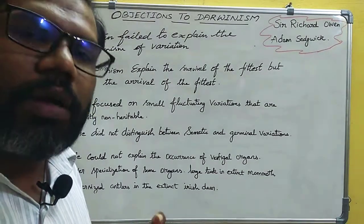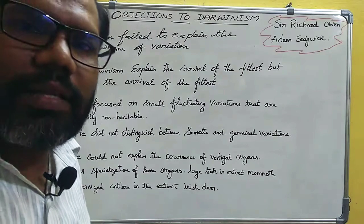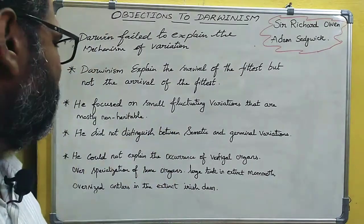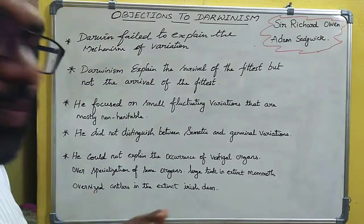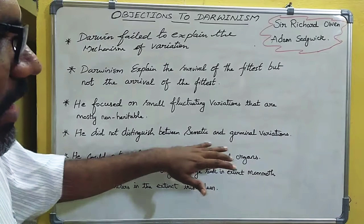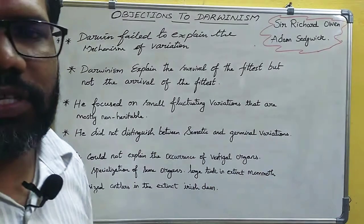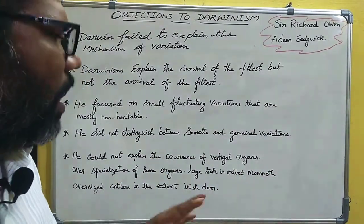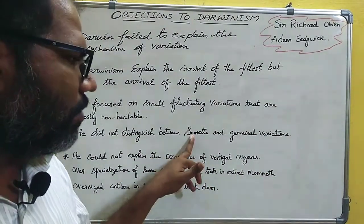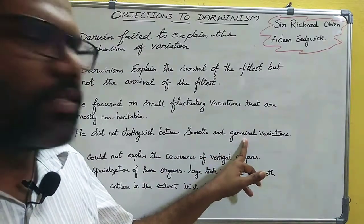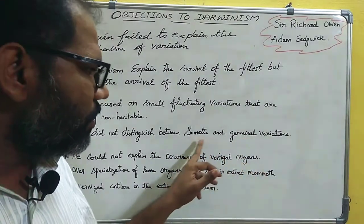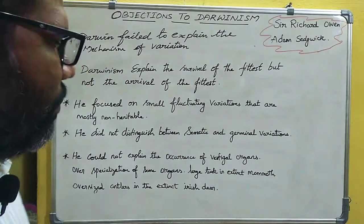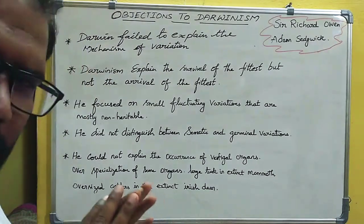Next, Darwin did not distinguish between somatic and germinal variations. Somatic cells are body cells and germinal cells are reproductive cells. Variations in somatic cells versus germinal cells have different implications, and Darwin failed to distinguish between them.